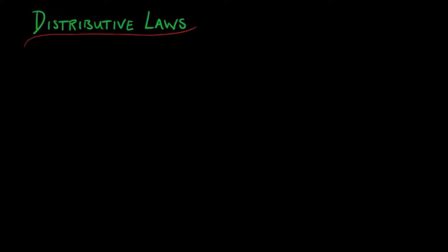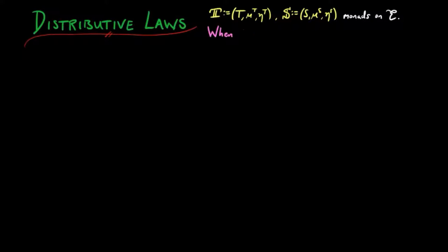In this video, we look at distributive laws for monads. A distributive law will allow us to combine the structure of two monads to produce a monad on the composite of the underlying endofunctors. If we are given monads T and S on E, we ask: when does the endofunctor ST have a monadic structure?